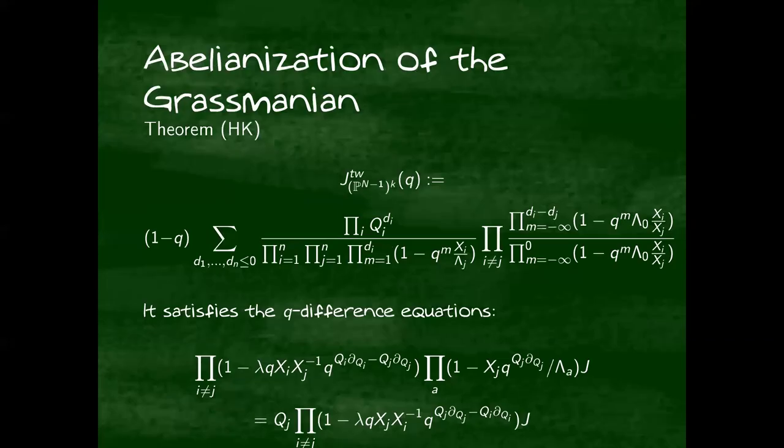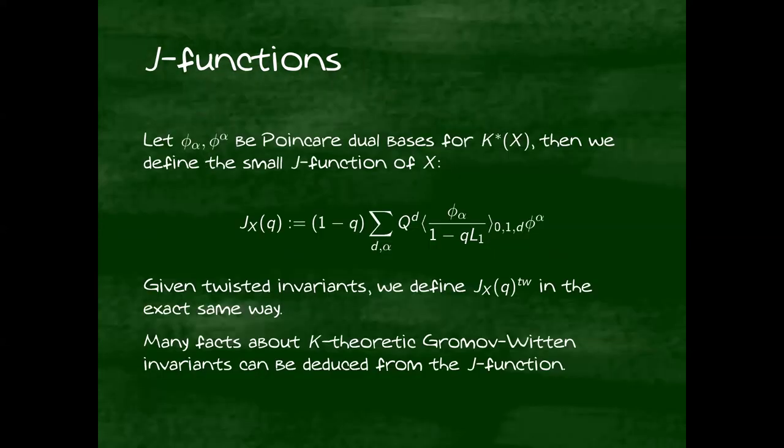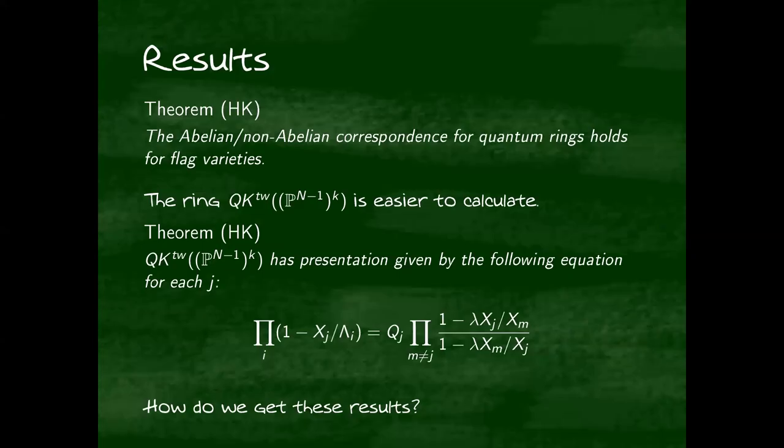What does this look like for the abelianization of the Grassmannian? The j-function is this thing. It's not so hard to check that it satisfies the q-difference equations given below. Then you can apply these theorems, assuming you check everything vanishes at infinity. The principal symbols of these operators give you the equations I've written over here.